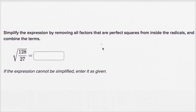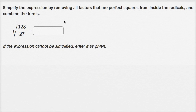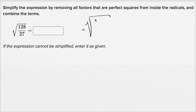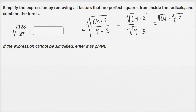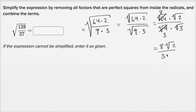All right, let's keep going — one more example. And as always, pause the video and see if you can work through it on your own before I work it out with you. Simplify the expression by removing all factors that are perfect squares. So this is equal to the square root of 128 over 27. Well, 64 times 2 is 128 and 64 is a perfect square, so I'll write it as 64 times 2. And 27 is 9 times 3, and 9 is a perfect square. So this is the square root of 64 times 2 over the square root of 9 times 3, which equals the square root of 64 times the square root of 2 over the square root of 9 times the square root of 3. That gives us 8 times the square root of 2 over 3 times the square root of 3.